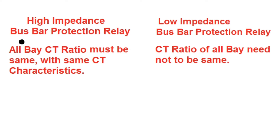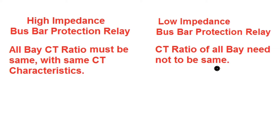In case of high impedance bus bar protection relay, all bay CT ratios must be the same with the same CT characteristics — that is, the knee point voltage and the CT resistance must be equal. In case of low impedance bus bar protection relay, the CT ratio of all bays need not be the same, and the characteristics of all the CTs need not be the same.